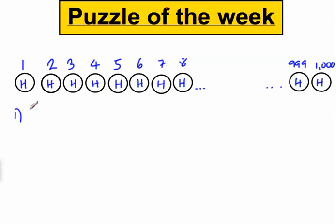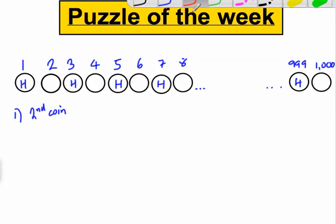The first thing I'm going to say to you is I'm going to turn over every second coin. So clearly the second one, the fourth one, the sixth, the eighth and every other second one up to a thousand is suddenly going to turn into a tail, because now they've been turned over from heads to tails.